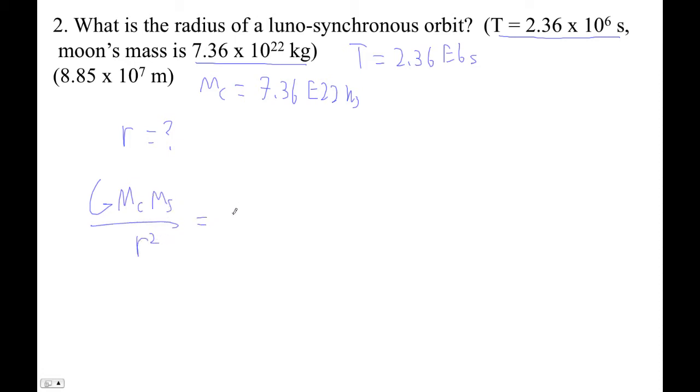GMcMs over r squared is equal to mass of the satellite, 4 pi squared r over T squared. Satellite mass cancels, and then what we can do is cross-multiply. So GMcT squared is equal to r squared times that. So 4 pi squared r to the third, and then we're solving for r. So we're going to divide both sides by 4 pi squared.